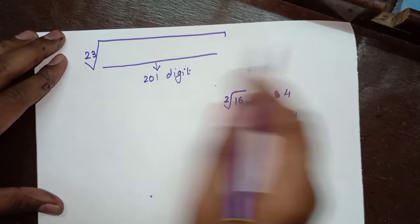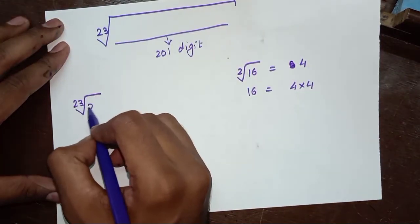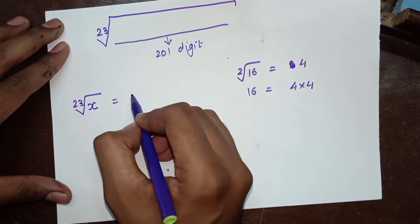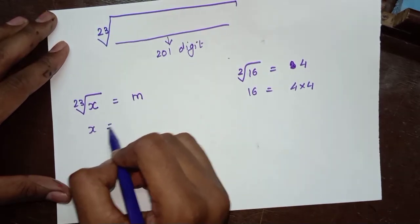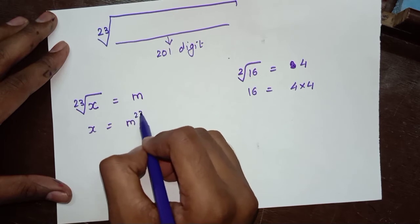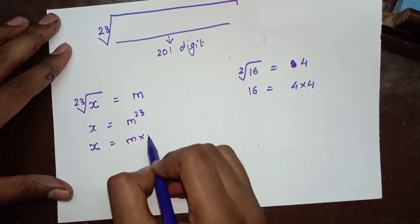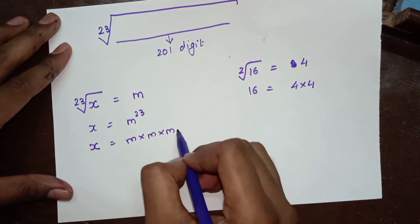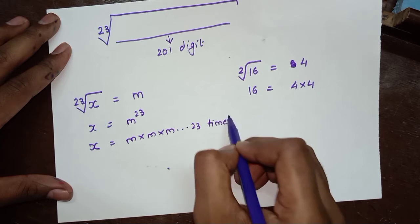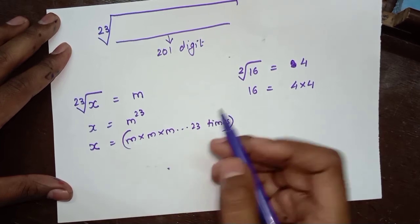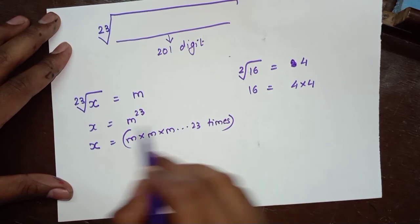In general, if the 23rd root of a number x is m, then x will be m raised to 23. Meaning x will be obtained by multiplying the number m with itself 23 times. When you multiply this number m which is the answer 23 times, you get the answer x.